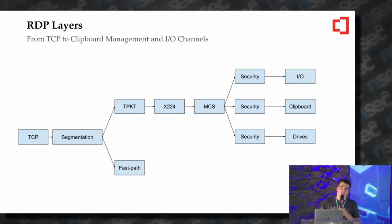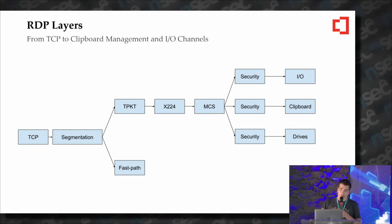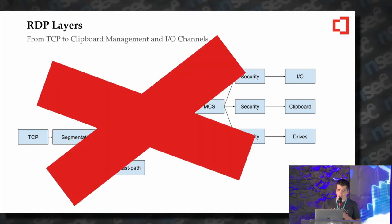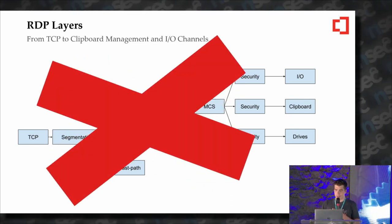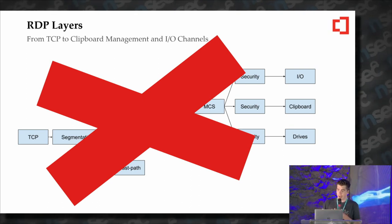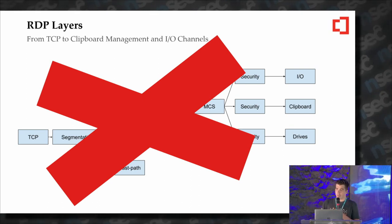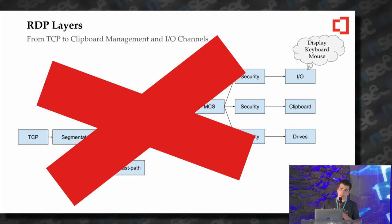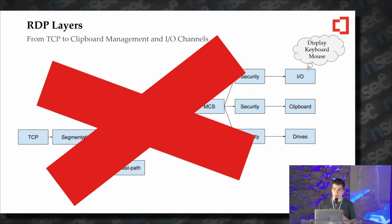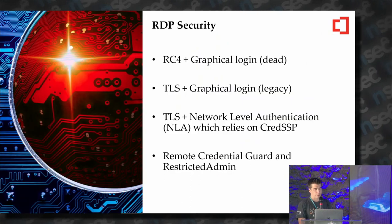So, the RDP layers. This is why this needs time, but let's forget about most of it — it's not that interesting and it's been already hammered on a lot before. We're going to focus on I/O, clipboard, and drives. By I/O, we mean display, keyboard, and mouse. These are the areas of focus of RDP today.